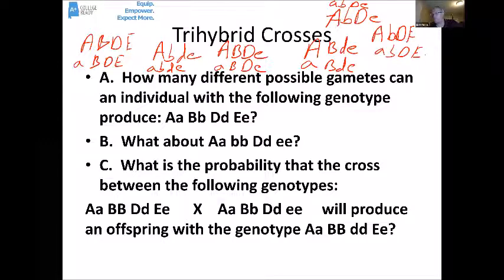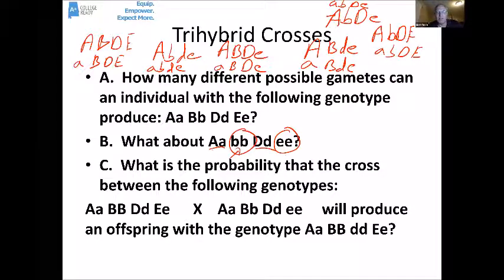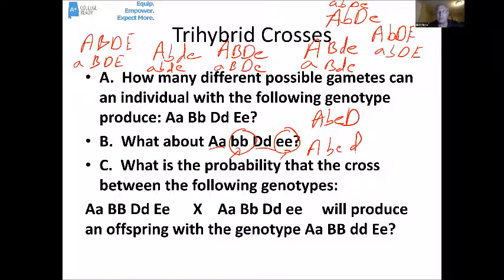Does anybody see a combination I've missed? Point being, you've got to come up with every distinct combination. Notice question B is going to have fewer possible combinations. These two alleles are different from each other, but these are the same and these are the same — so every cell is going to get one little b and one little e. They could get big A and big D, big A and little D, little A and big D, or little A and little D — only four possible combinations.